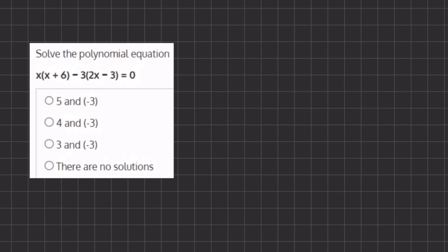Alright, so in this problem we have to solve the polynomial equation. Now in order to do so, we want to take this equation and turn it into a polynomial, and so we are going to simplify it by distributing this x into the parentheses and this 3 into the parentheses in order to be able to simplify.